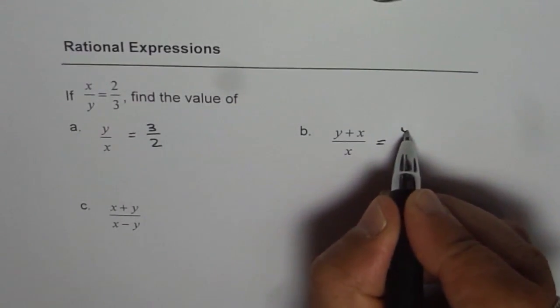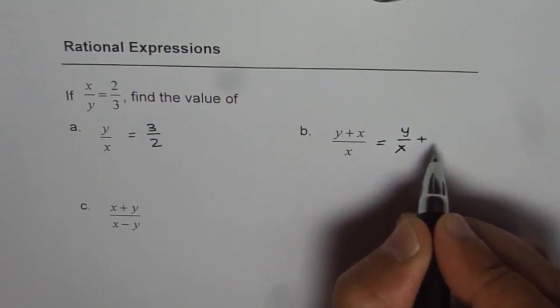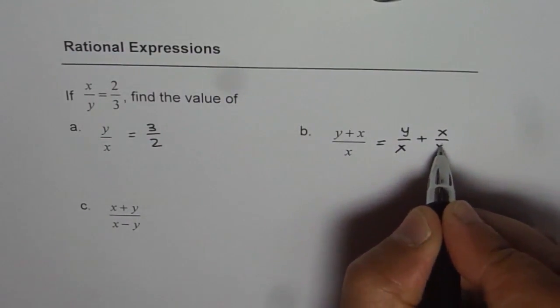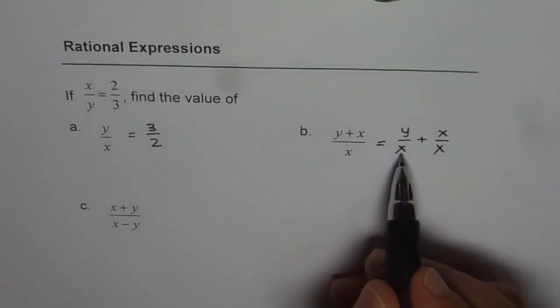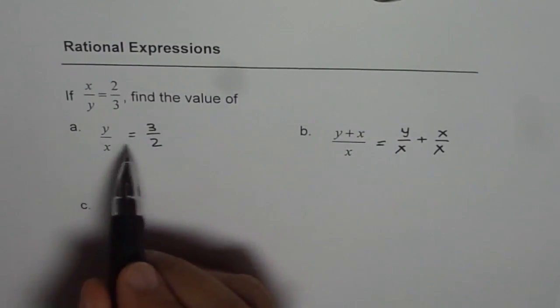Well, we can write this as y over x plus x over x. Now I think it's easy. y over x is 3 over 2.